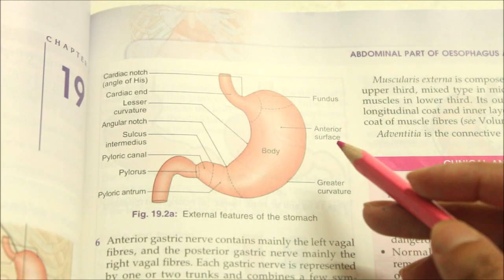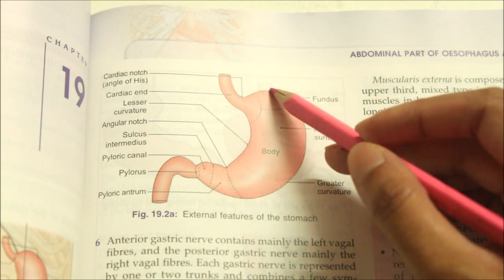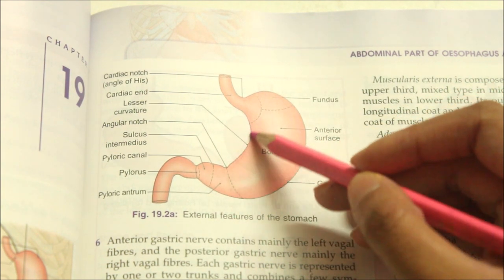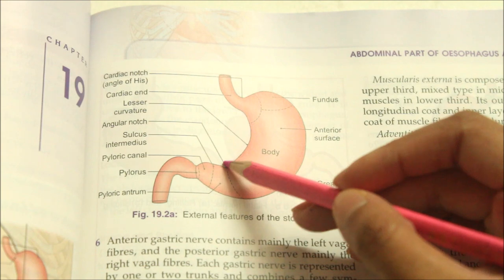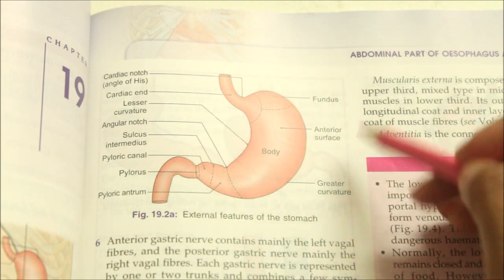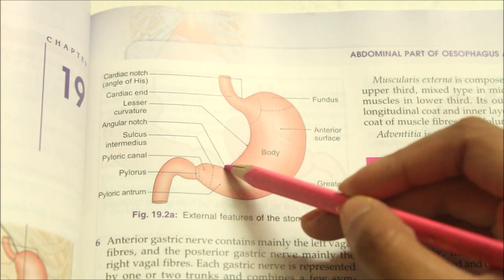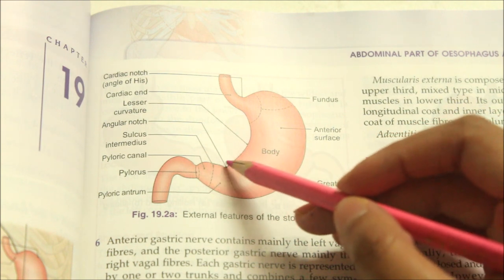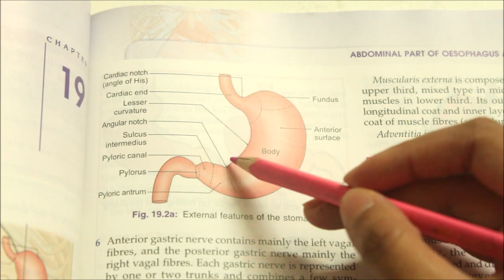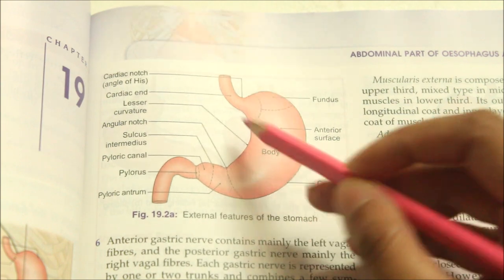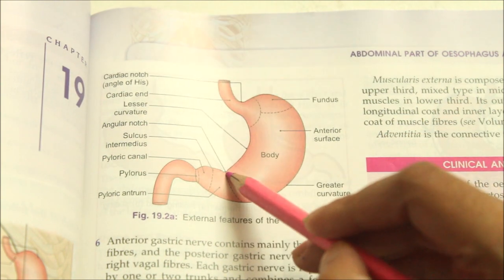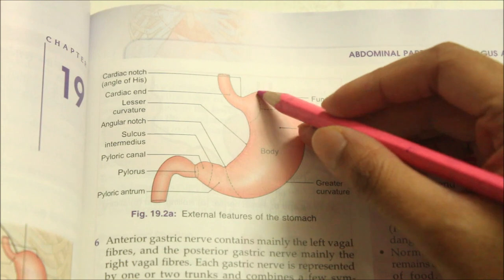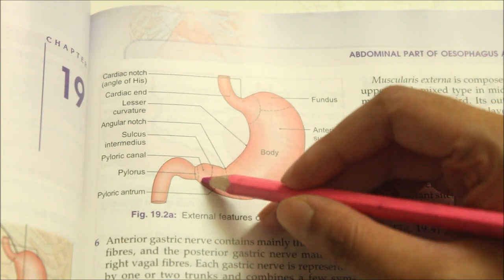The lesser curvature is concave and forms the right border of the stomach. It provides attachment to the lesser omentum. The most dependent part of the curvature is marked by the angular notch.